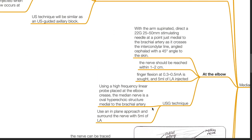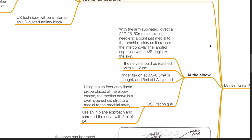At the elbow level, to block the median nerve, with the arm supinated, direct a 22 gauge 25 to 50 mm stimulating needle at the point just medial to the brachial artery as it crosses the intercondylar line. Angle cephalad with a 45 degree angle to the skin. The nerve should be reached within 1 to 2 cm. Finger flexion at 0.3 to 0.5 milliamps is sought and 5 mL of local anesthetic injected.